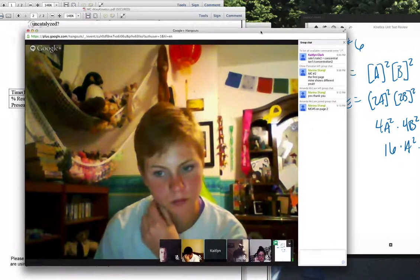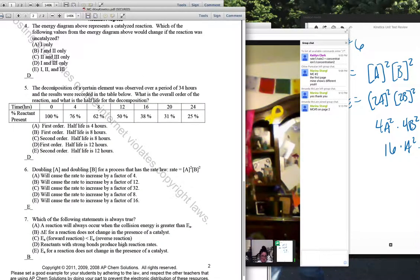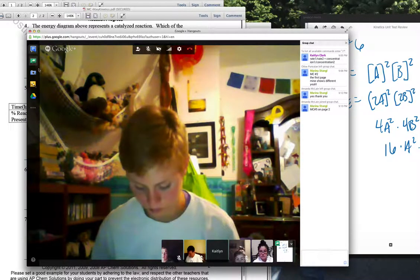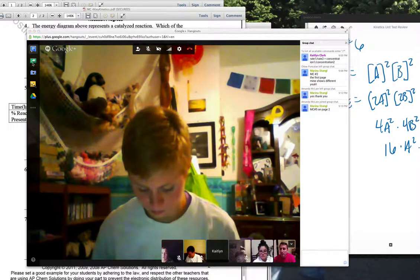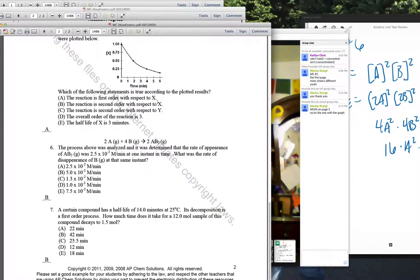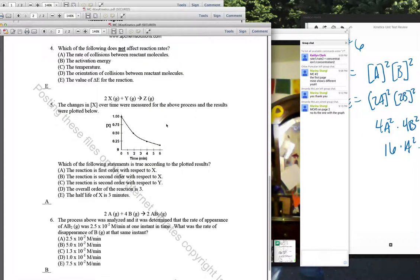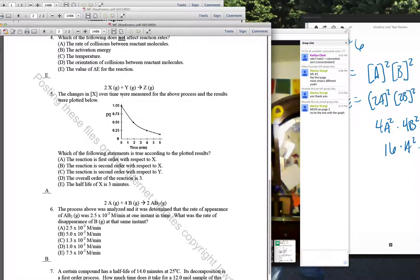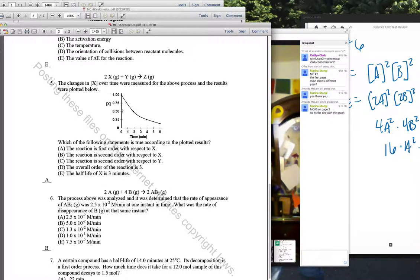All right. Marina, multiple choice five on number, on page two. It's not this one right here, the decomposition, is that the one? Let me screen share that one. No, it's the one with the graph. Oh, okay. So, multiple choice kinetics three. Number five, right here. Oh, the changes in X, the concentration of X over time were measured for the above process and the results were plotted below. So, we have concentration versus time. And we have that reaction 2X plus Y, you'll see which of the following statements is true according to the plotted results.